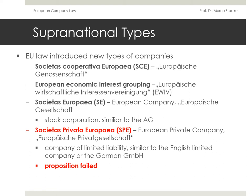Especially the movement of the company from one country to another should be made easier. However, the European legal forms have not developed much dynamic in reality. One of the reasons for this rather modest rate of success is that relevant EU regulations often refer to the national law of the state of incorporation for specific provisions. The so-called Renvoi weakens the supranational character of the companies and thus eliminates one of the advantages of a theoretically neutral legal form.